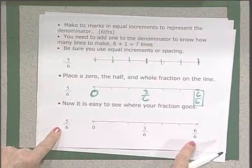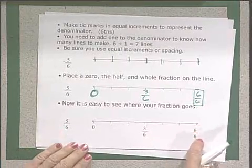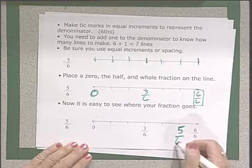Again, now it's easy to figure out where yours goes. If you have six sixths, five sixths is right before six sixths.